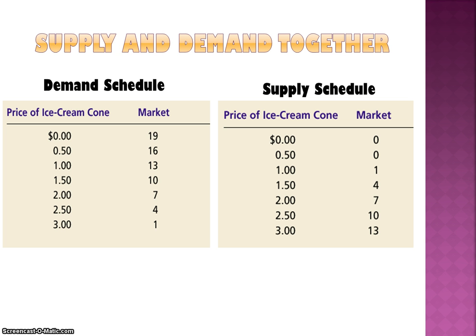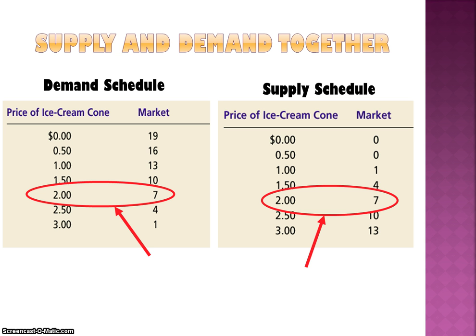Here's a demand schedule for ice cream cones — how many ice cream cones would be purchased by consumers at every given price in the market. We also have the supply schedule for ice cream cones, telling us how many ice cream cones all producers in the whole market would sell at each various price. We can see that the equilibrium in this market would be two dollars and seven ice cream cones purchased and sold — the equilibrium price is two dollars and the equilibrium quantity is seven, because that's where the demand schedule and supply schedule are equal.